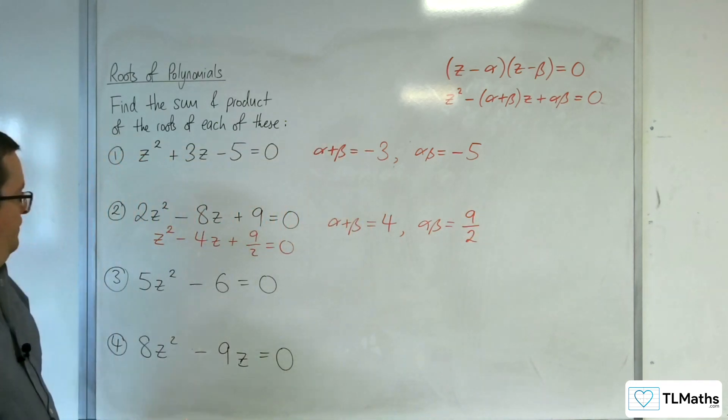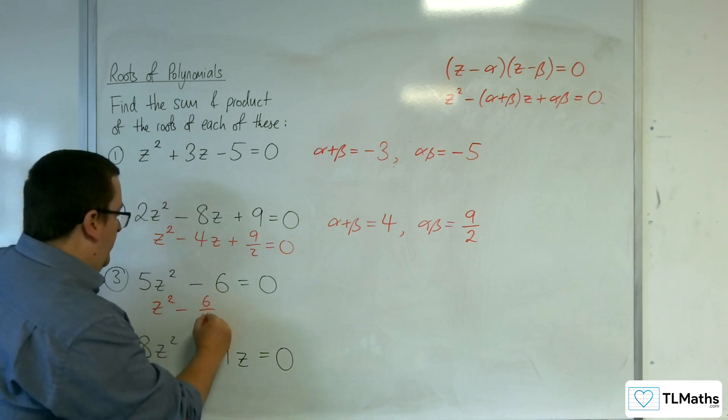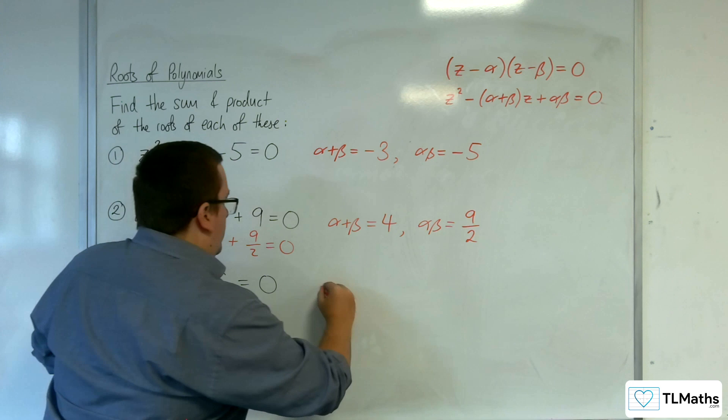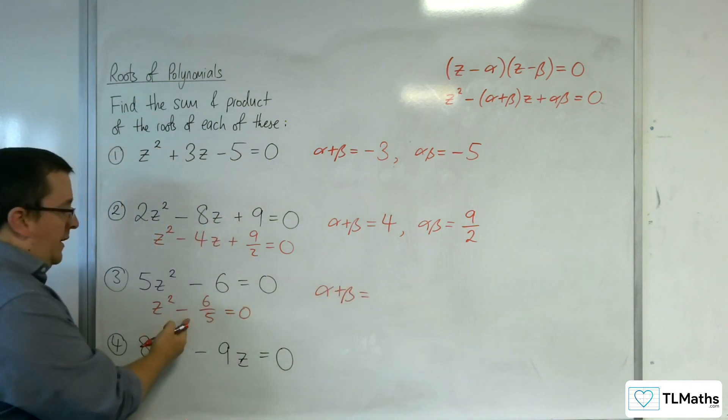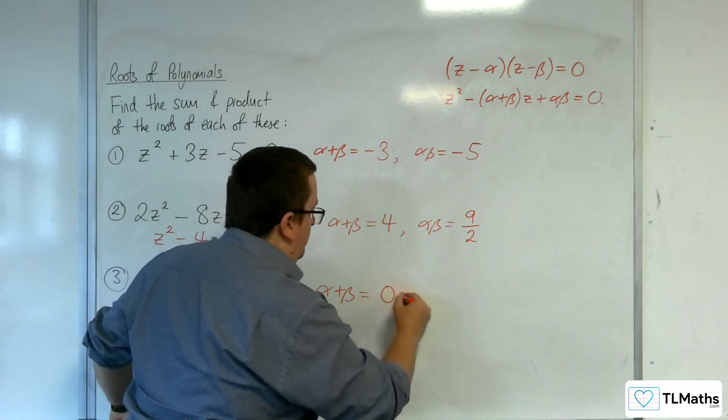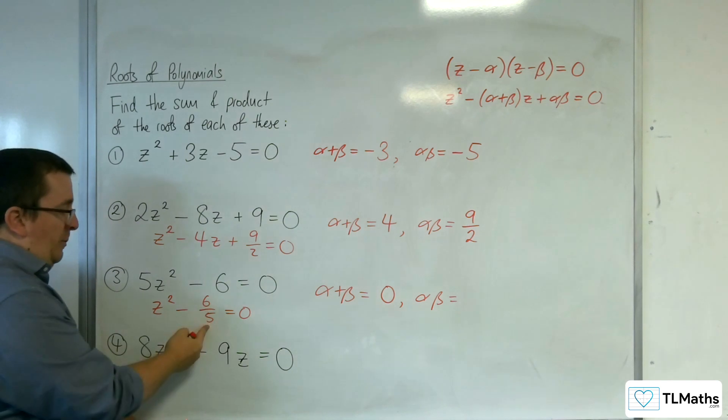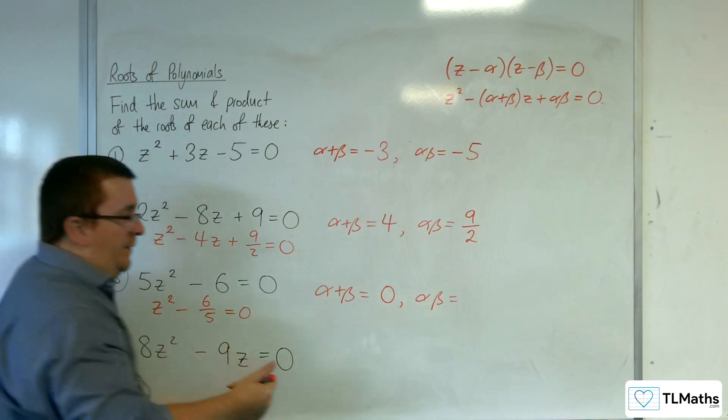This one I need to divide through by 5 first. So z squared take away 6 fifths equals 0. So the sum of the roots, well, the coefficient of z here is 0, so alpha plus beta must be 0. And alpha beta must be the bit that's on the end, minus 6 fifths.